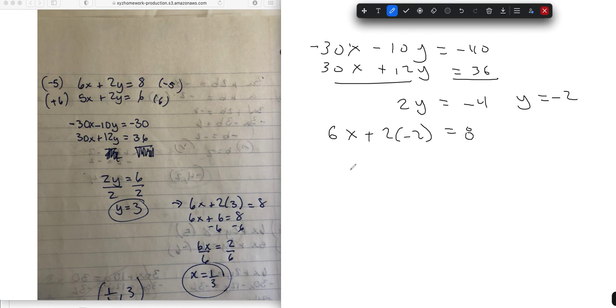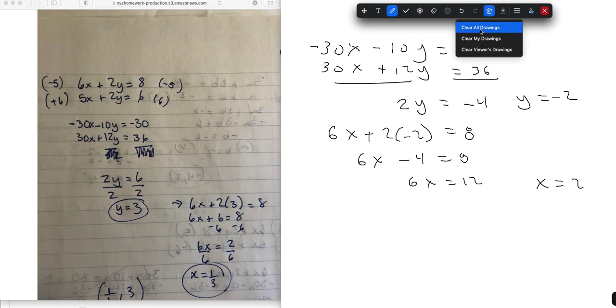Equals 8. 6x minus 4 equals 8. Add that over, yep. Then 6x equals 12, and x equals 2. On a side note, there's a little bit easier way to do this one. Let me just show you.